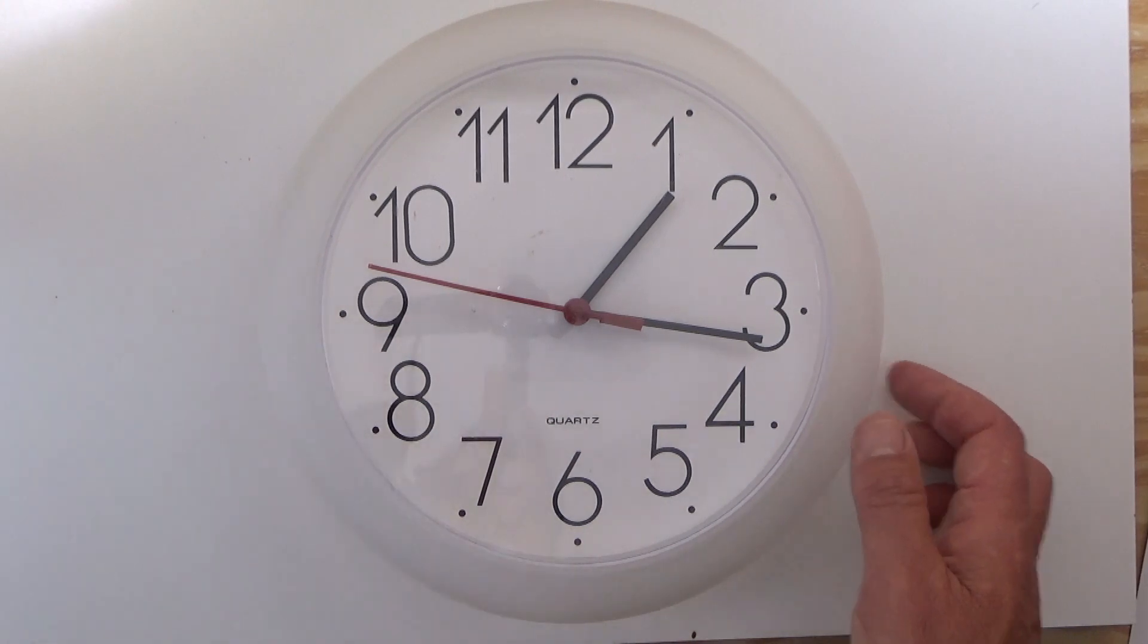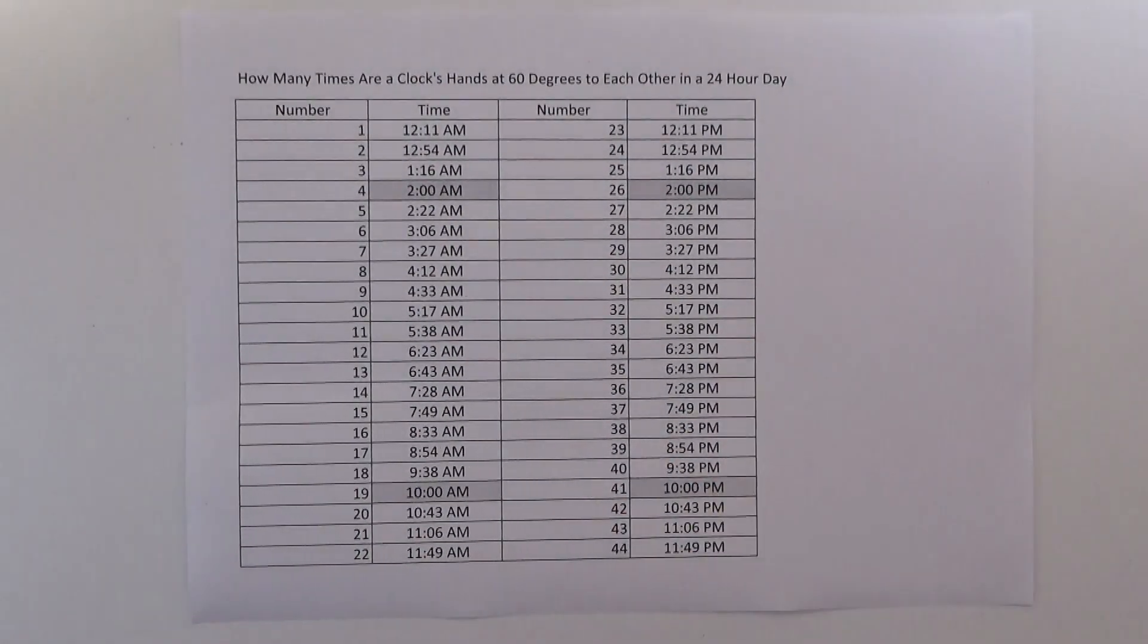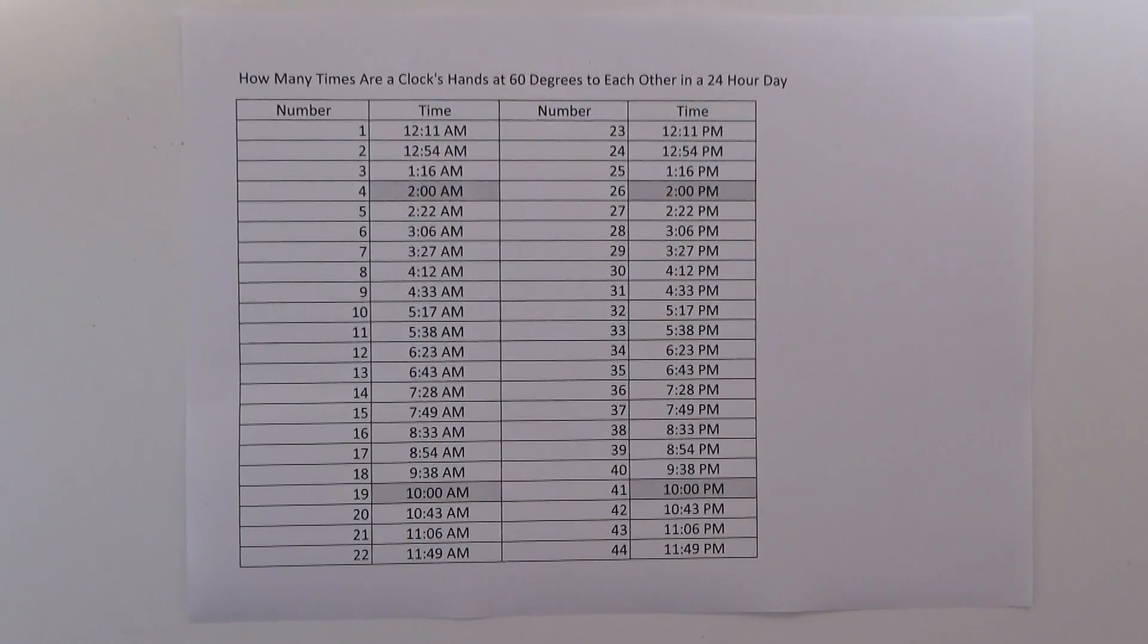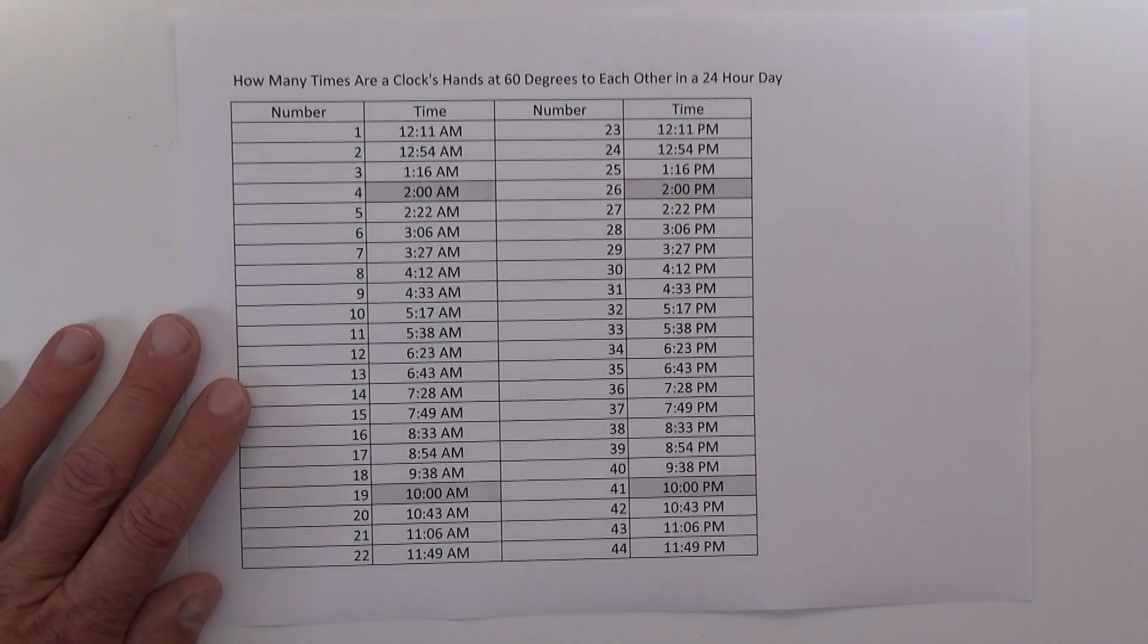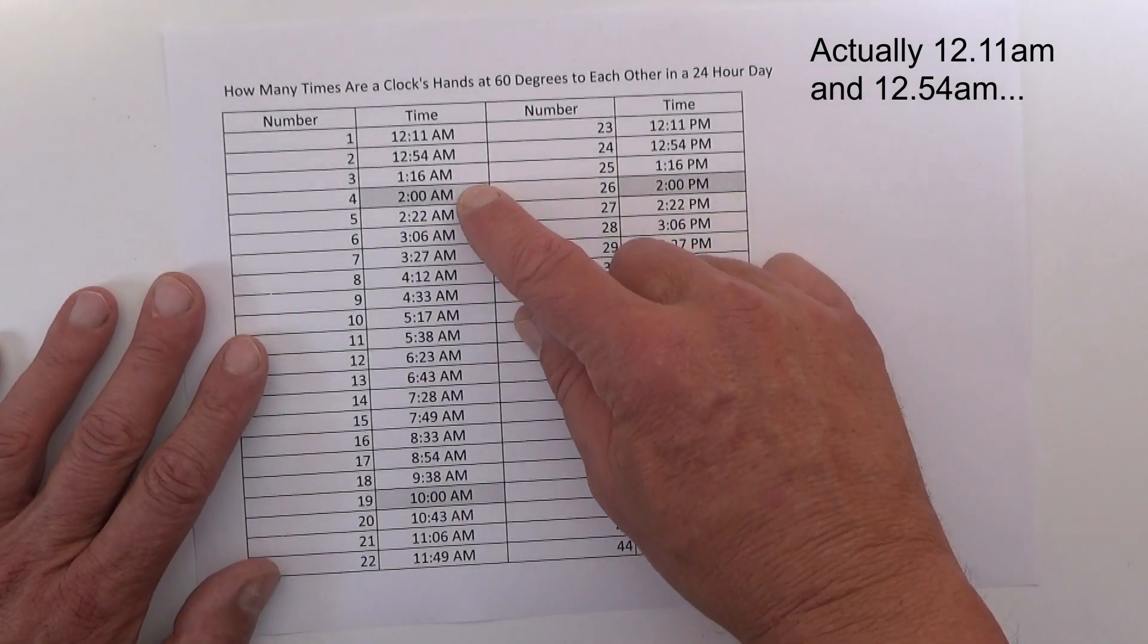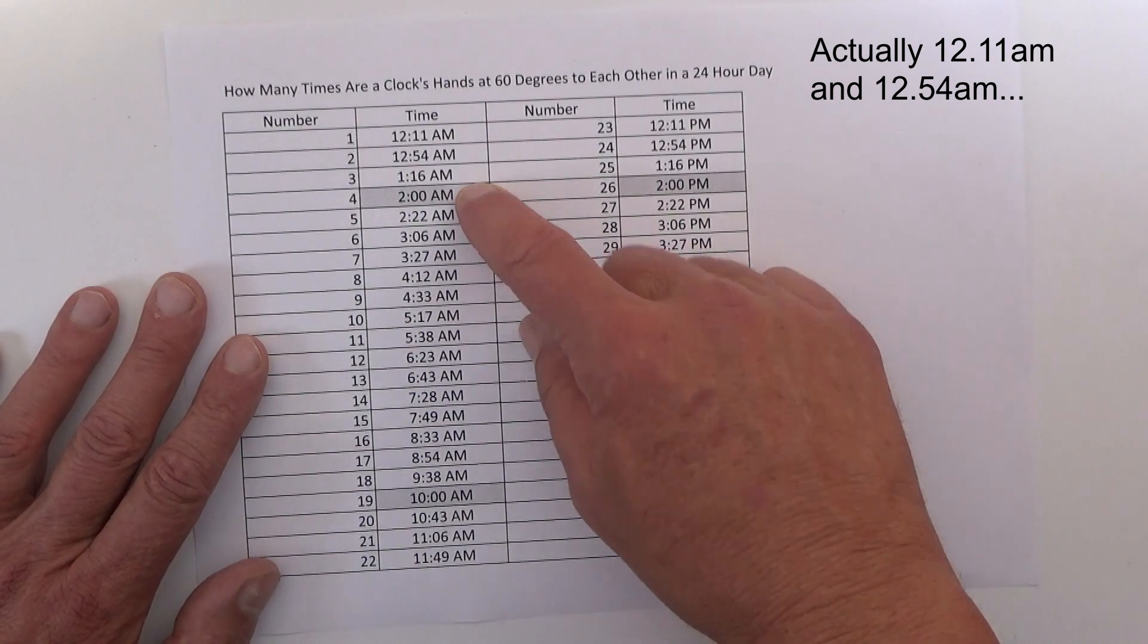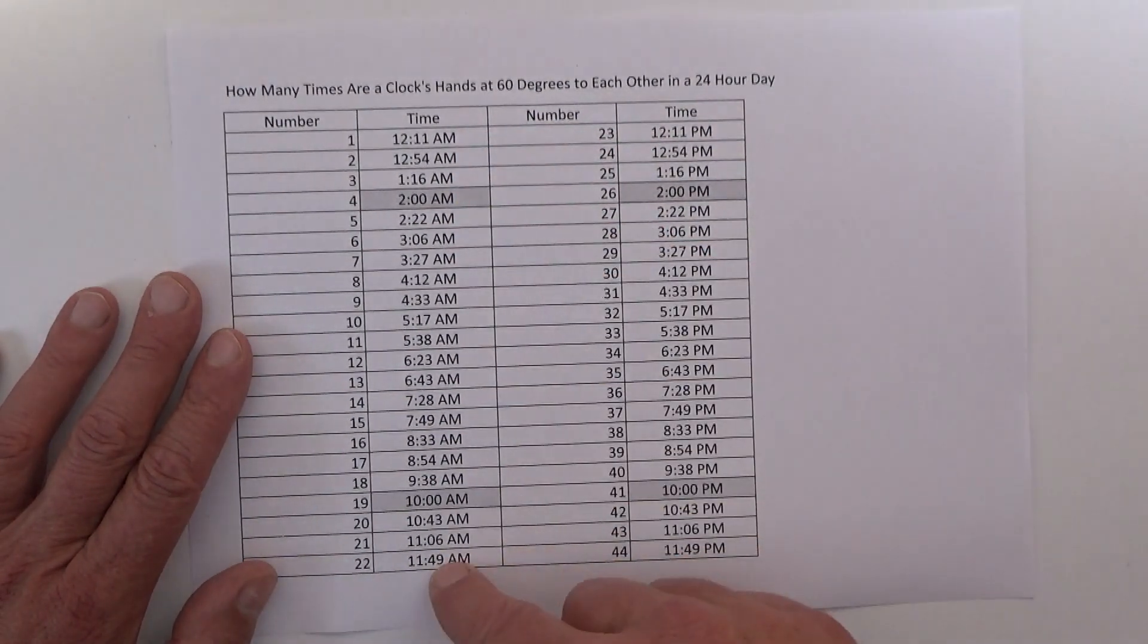Now what I'm going to do is show you this simple grid of all the times in a 24-hour day that a clock's hands are at 60 degrees. You can see here the first time I showed you: 2:11, 12:54, and 1:16, and then at 2 o'clock. There are all the times in the first 12 hours of the day in the morning up till midday.